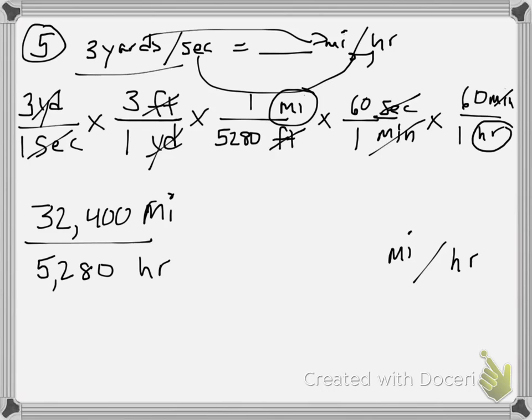So mathematically, this is correct. But as a unit rate, we need to divide. So 32,400 divided by 5,280 is 6 and 136 thousandths. And it asked us for an about kind of answer. So we could say this is about 6 miles per hour.